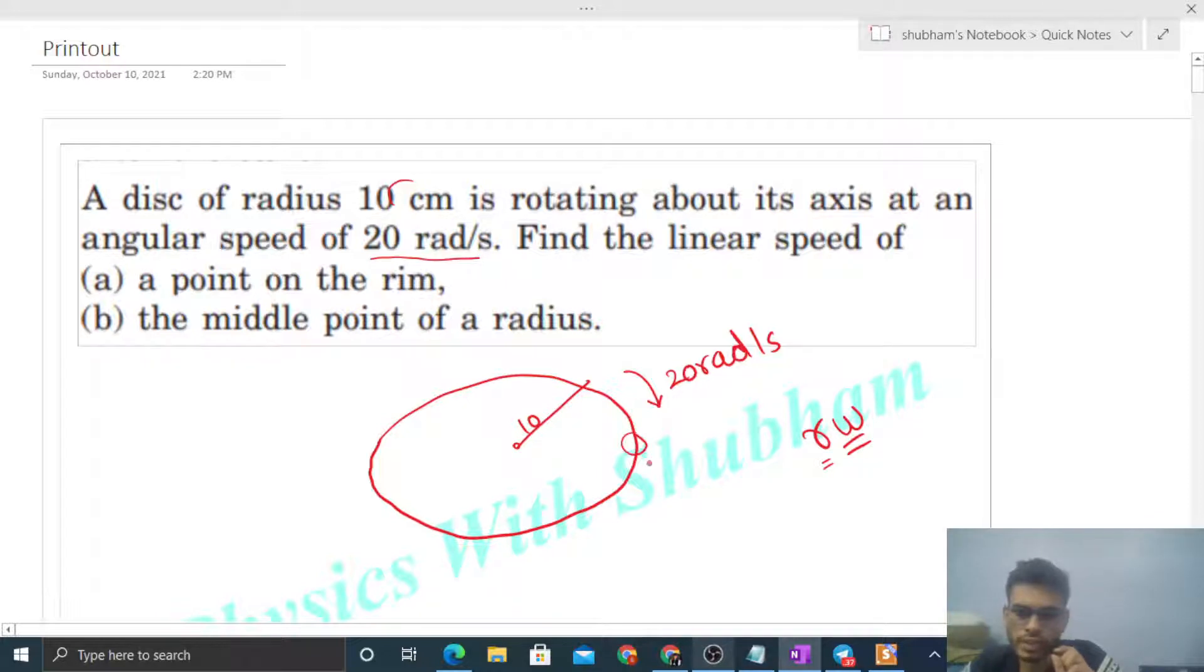Let's say point P is on the rim. Then the linear velocity of point P will be, what is r for this point P? That is radius, right? So 10 into omega, how much is this? 200. So that is 200 centimeter per second. Because r is given in centimeter, so you can take it to be 2 meter per second.